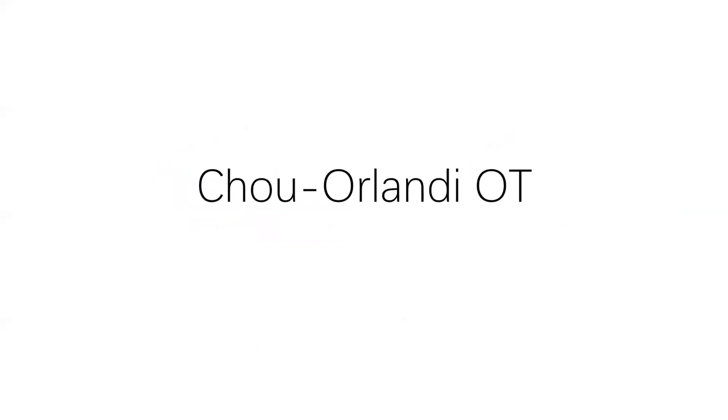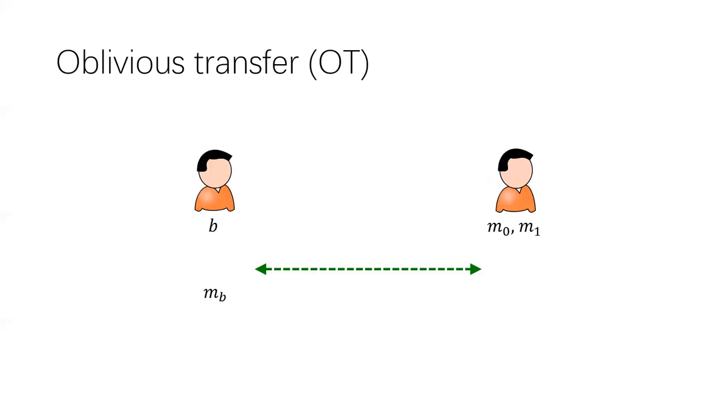Now let's see some applications of our new UC-AGM framework. The first one is the Chou and Orlandi OT protocol. Recall that a 1-2-OT protocol is as follows: a sender has two messages, M0 and M1, and a receiver has a bit B. At the end of the interaction, the receiver learns one of the messages, MB, but not the other message, and the sender doesn't learn which message was sent.